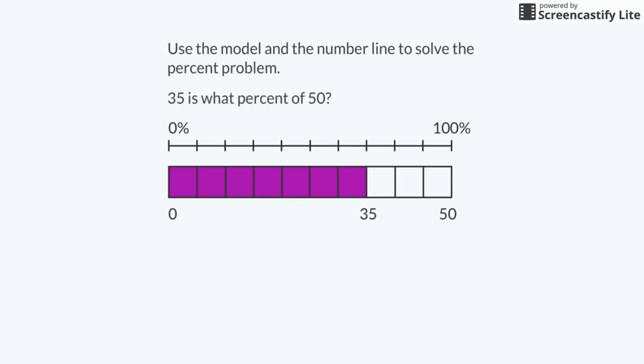Remember, each tick mark represents 10%. If I look at the number line, the 7 sections correspond to 70%. So 35 is 70% of 50.